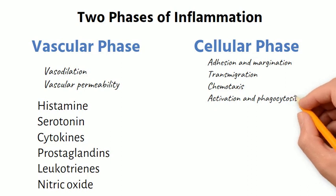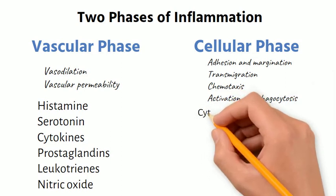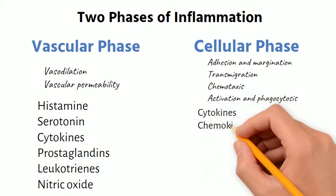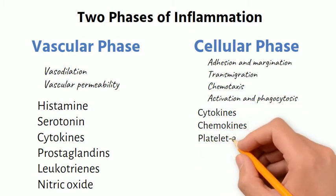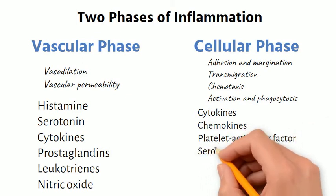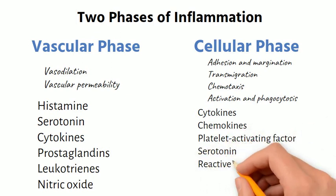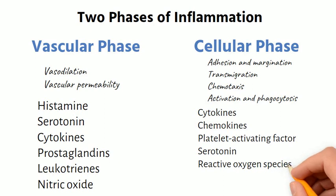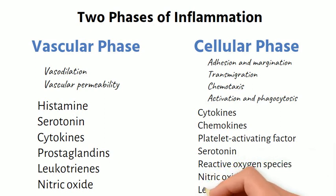Some of the mediators in the cellular phase of inflammation are cytokines, chemokines, platelet-activating factor, serotonin, reactive oxygen species, nitric oxide, and leukotrienes.